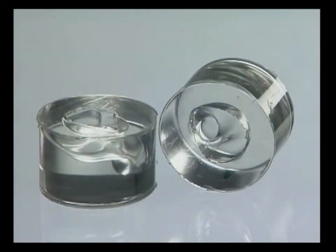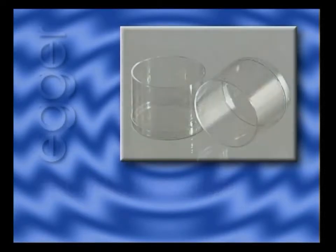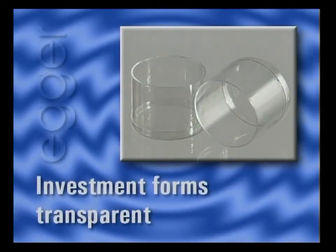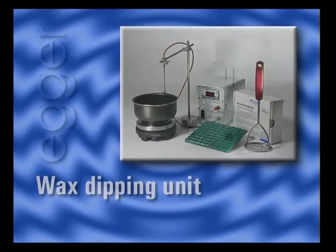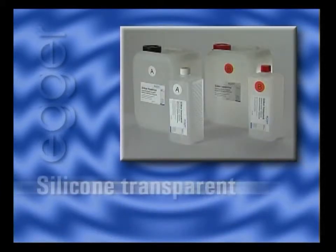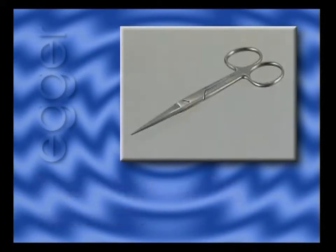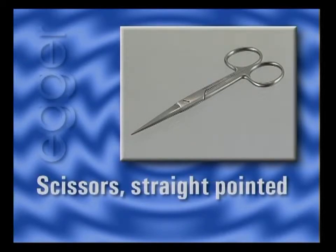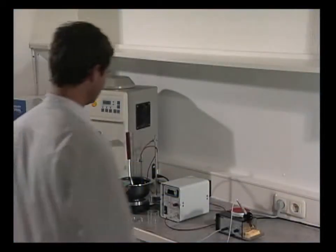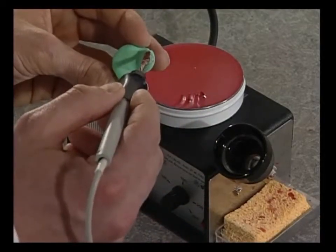Transparent silicone control forms are produced for ITE shells made of light polymers. The electric wax knife is used to correct inaccuracies on the impression with red correcting wax.